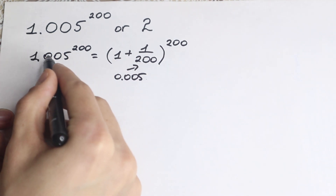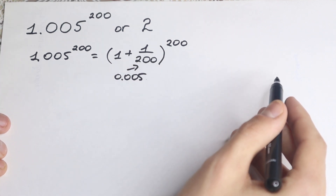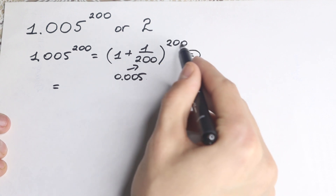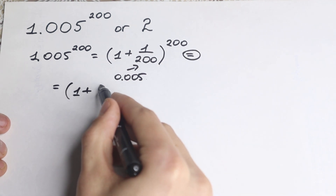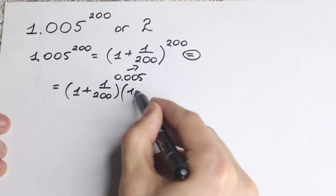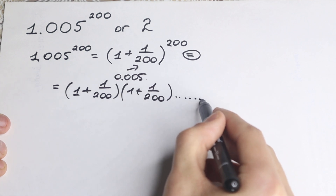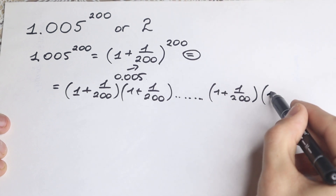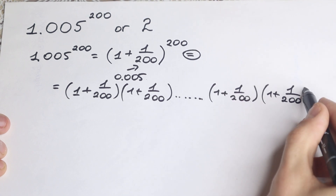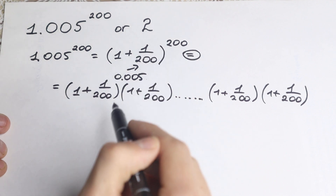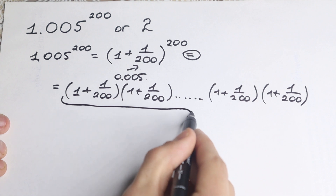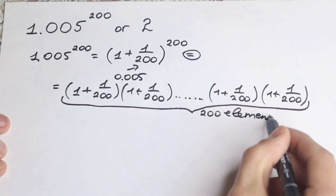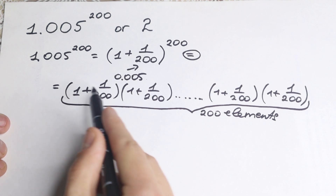I just want to write from this decimal form to a fraction: 1 plus 1 over 200. This expression can be written as a product because we have the same element raised to the power 200. So we will have (1 + 1/200) multiplied together — we have 200 elements because the power is 200. So we multiply this expression 200 times.